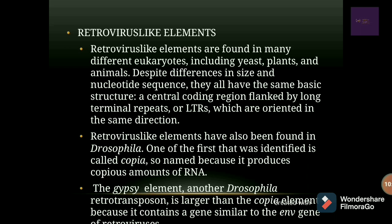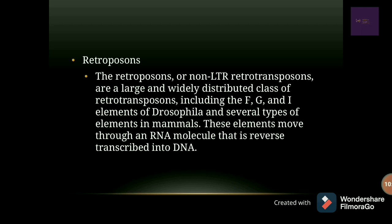Another Drosophila retrotransposon is the Gypsy element, which is larger than Copia because it contains a gene similar to the ENV gene of retroviruses. Non-LTR retrotransposons are very large and widely distributed. This class includes the FGI element of Drosophila and several types of elements in mammals, including LINEs and SINEs in humans. These elements move through an RNA intermediate via reverse transcription, which involves the enzyme reverse transcriptase.